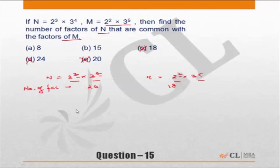Now you will have a common factor only if you have up to 2 square, which means you can have 2 to power 2, 2 to power 1, or 2 to power 0. If you have 2 to power 3, 2 to power 3 is available in N but not in M. So that means 2 to power 2 is the highest you can go to.